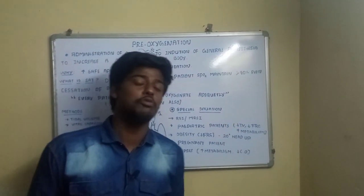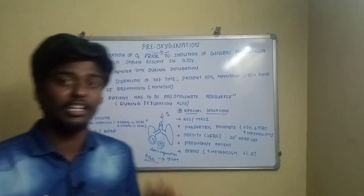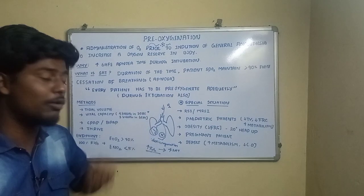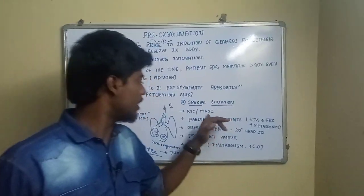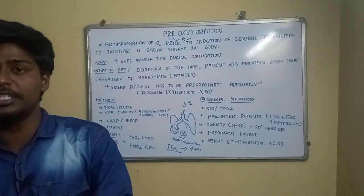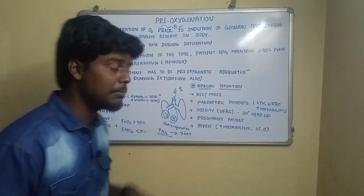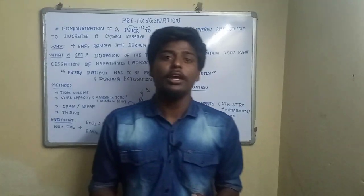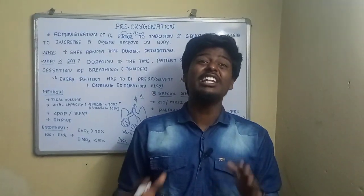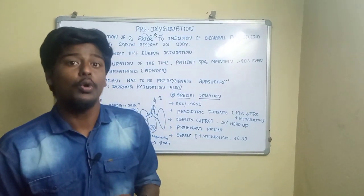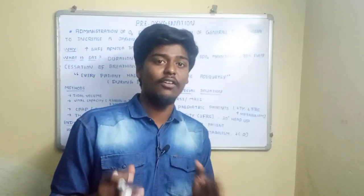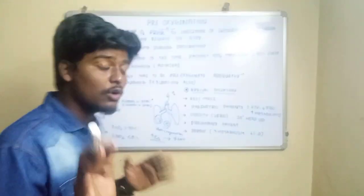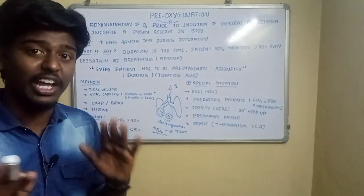There are five special situations where correct and effective pre-oxygenation is essential. The first is RSI or MRSI — rapid sequence induction or modified rapid sequence induction. These apply to full-stomach patients who have an increased risk of aspiration. To prevent aspiration, an RSI intubation technique is used, and pre-oxygenation must be done correctly within the required time.